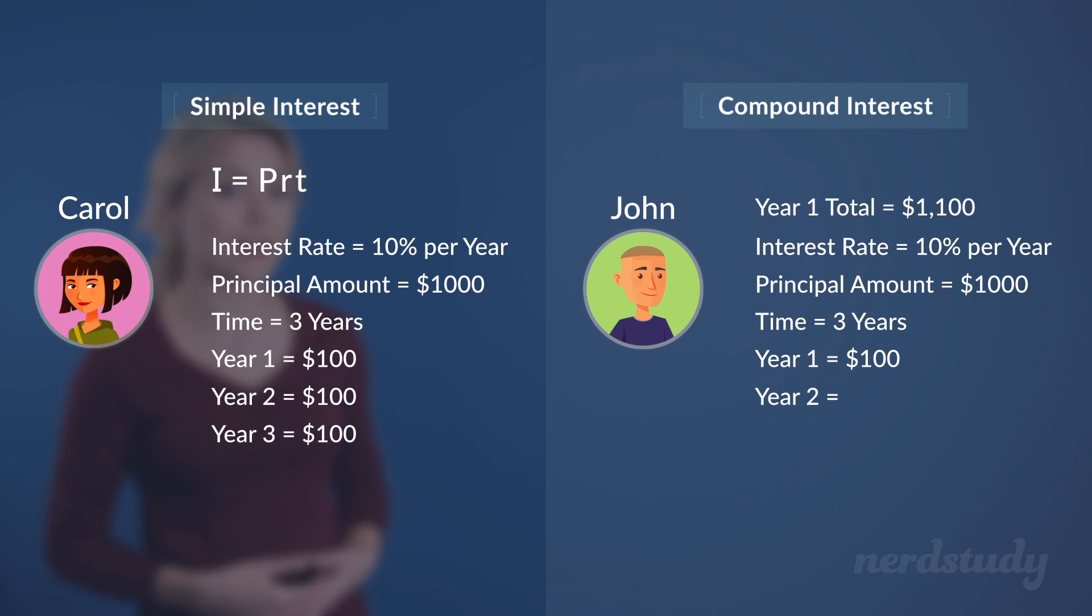This makes his second year yield more returns than Carol's second year, since 10% of $1,100, which is $110, is obviously bigger than 10% of $1,000, which is $100. You can imagine this difference getting bigger and bigger when the third year comes along, since Carol would, once again, be making 10% of $1,000, which is $100, while John would be making 10% of $1,210 this time, which would be $121. As we can see, there's already a big difference.